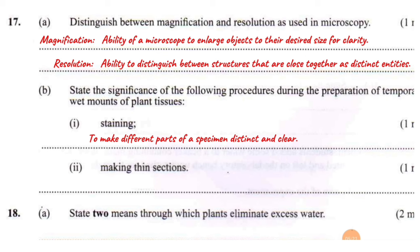Making thin sections: the sections of the specimen should be very thin. Most microscopes in school labs are light microscopes that rely on light for illumination of the specimen. Light needs to be able to pass through the specimen — it cannot pass through specimens that are too thick. So specimens need to be thin to reduce the layer of cells and tissues and allow light to pass through for illumination.